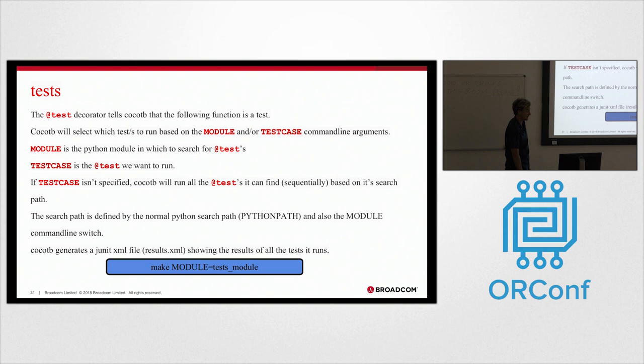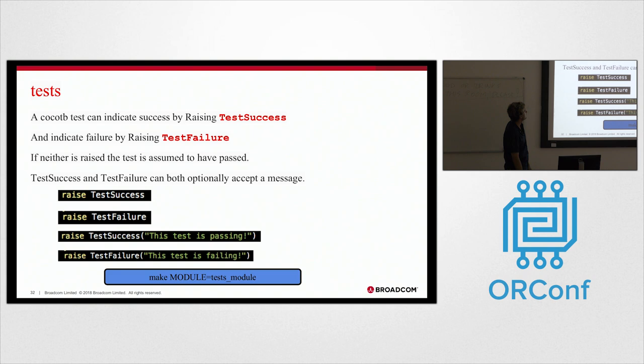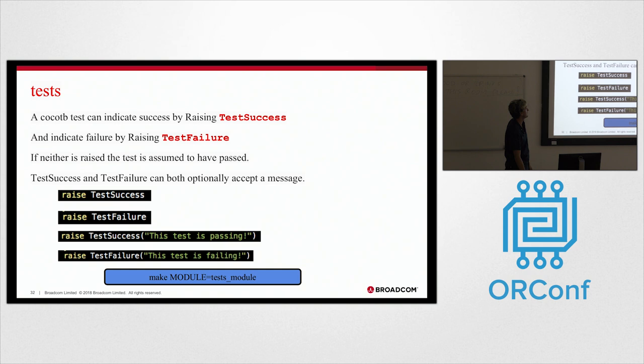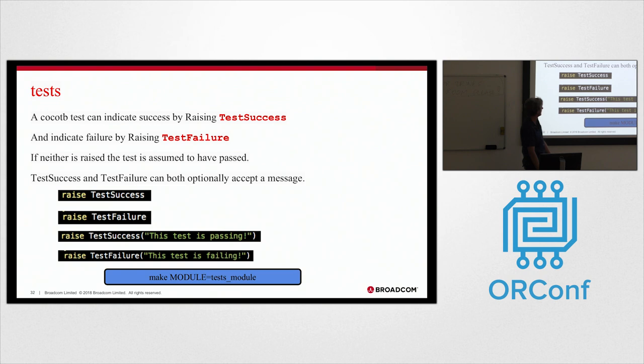So the test decorator is how you tell Cocoa TB that your function is a test. By default, if you fire up Cocoa TB and run your simulation, it'll go and find all these Cocoa TB tests and run them all sequentially. You can control that behaviour by passing in the module and test case command-line arguments. CocoTB generates a JUnit XML file to suck into Jenkins or whatever CI you're using. This is the final part of the test. This is a way you indicate if your test has been successful or not. These messages here show up in the JUnit file, which is pretty nice.